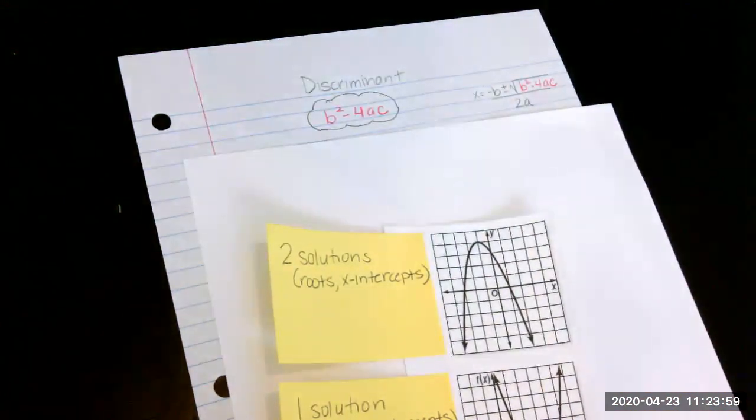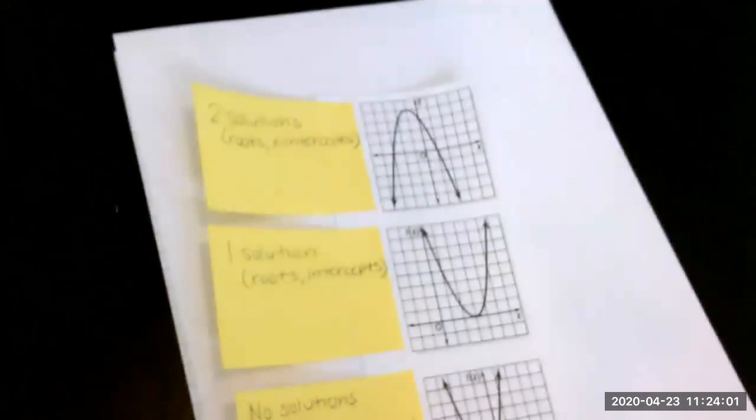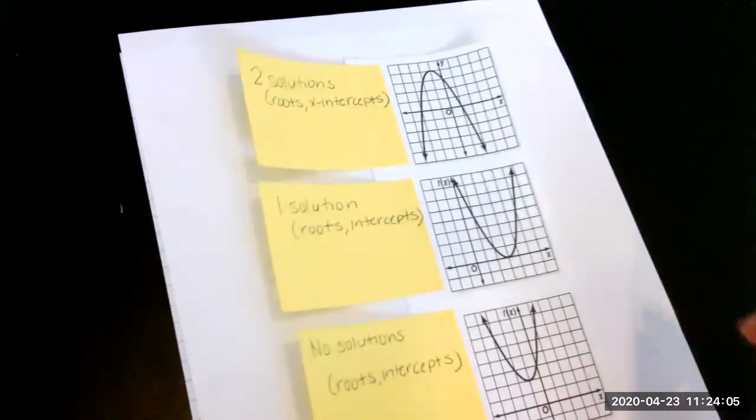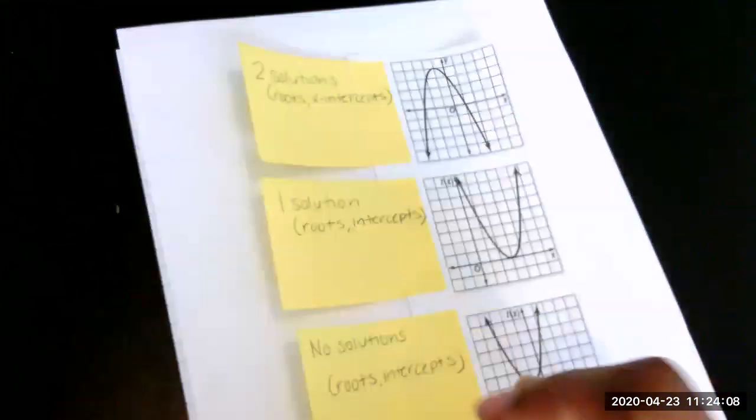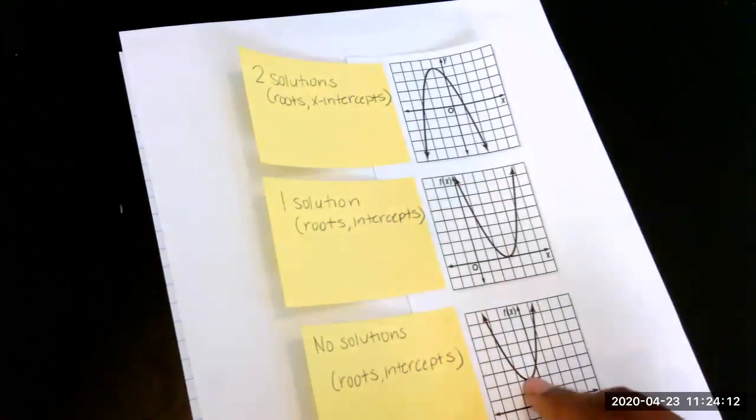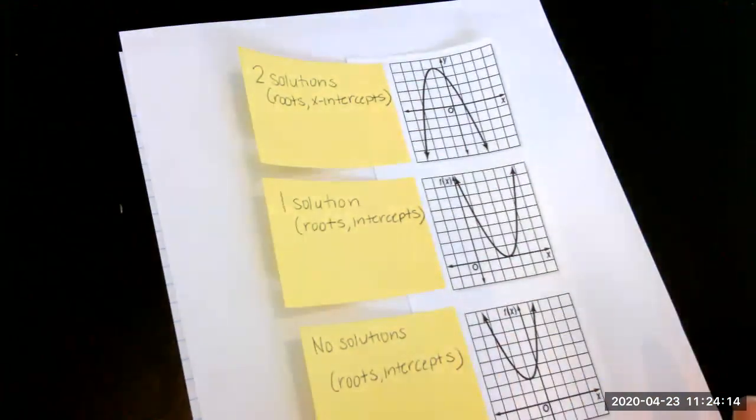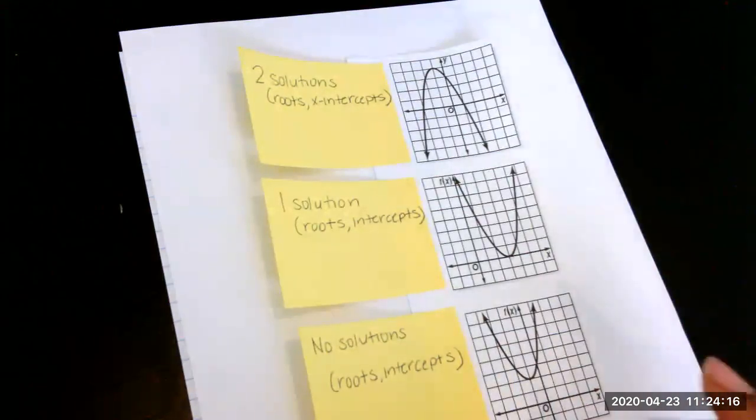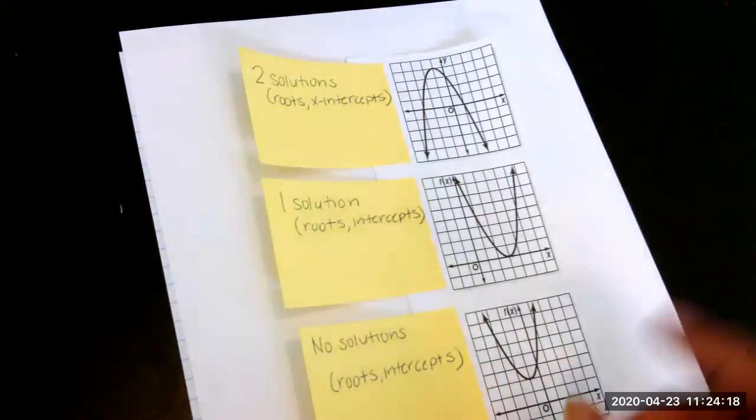So let me tell you what the discriminant does. The discriminant will just tell you how many solutions a graph has. In this case, you see it crosses here twice, so it has two solutions. In this case, it has one. In this case, it has none. As you can see, it doesn't tell you what the solutions are. It just tells you how many it has.